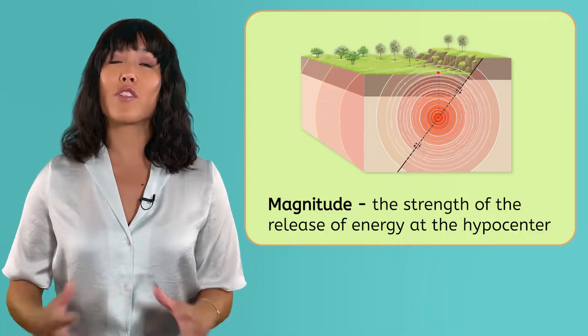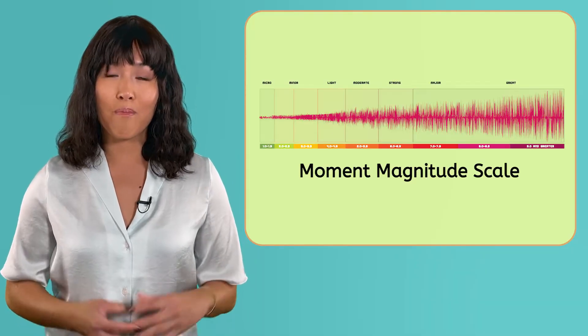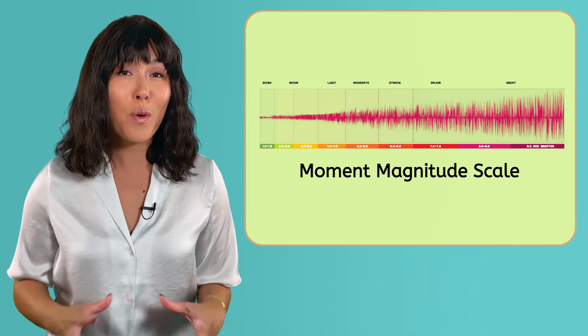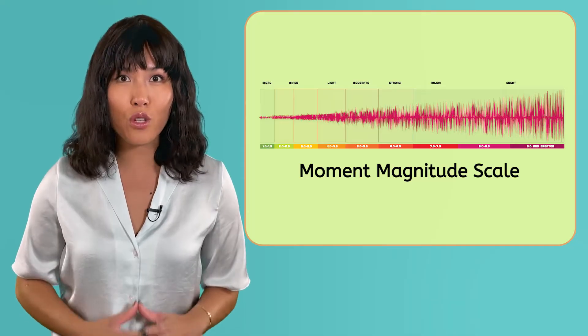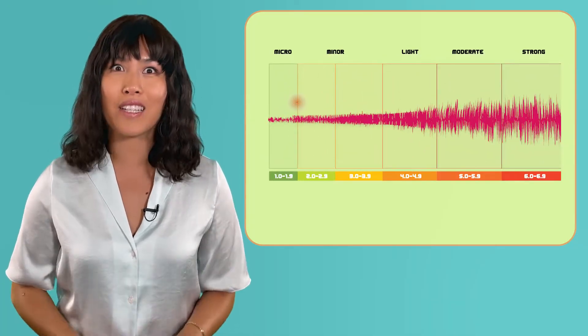Seismologists measure magnitude with a system called the moment magnitude scale. Most earthquakes are so small that we don't even feel them on Earth's surface, so they're only around a 1 or 2 on the moment magnitude scale.